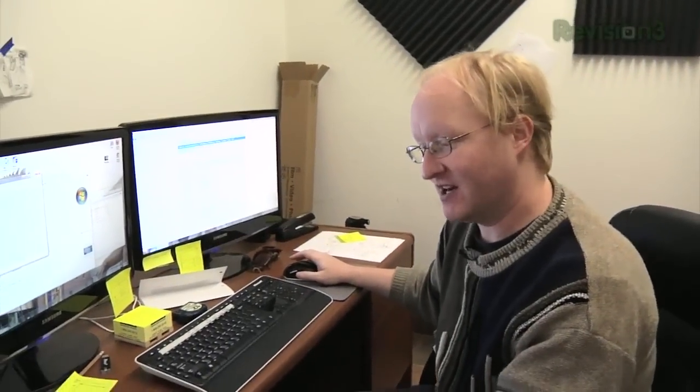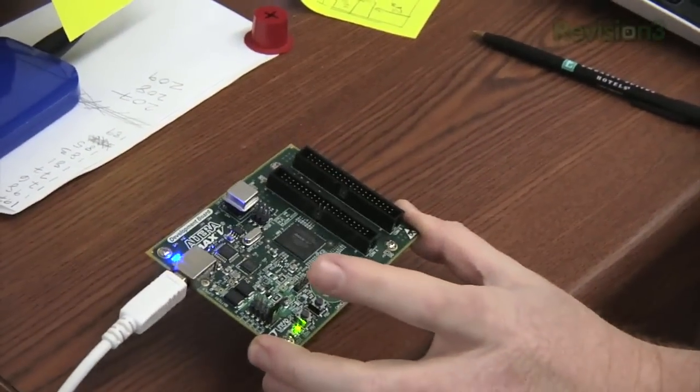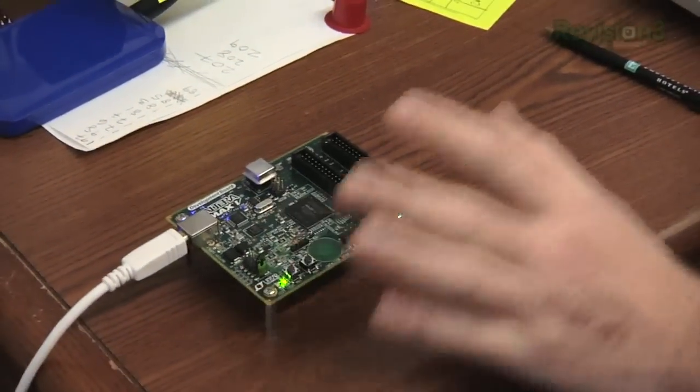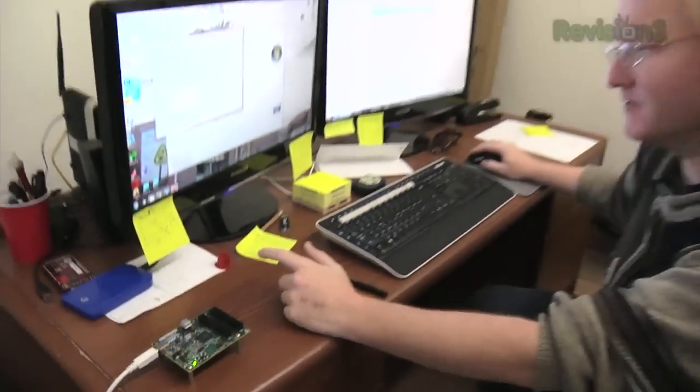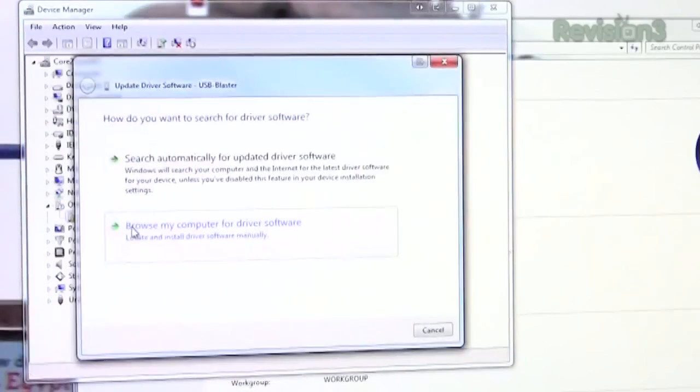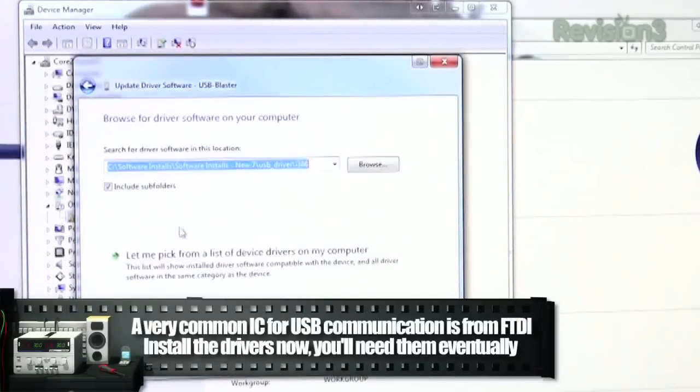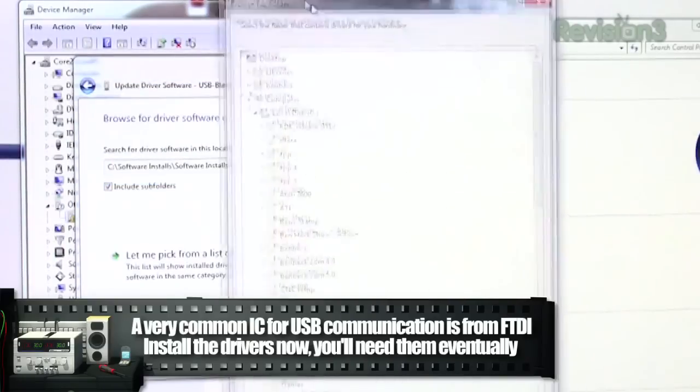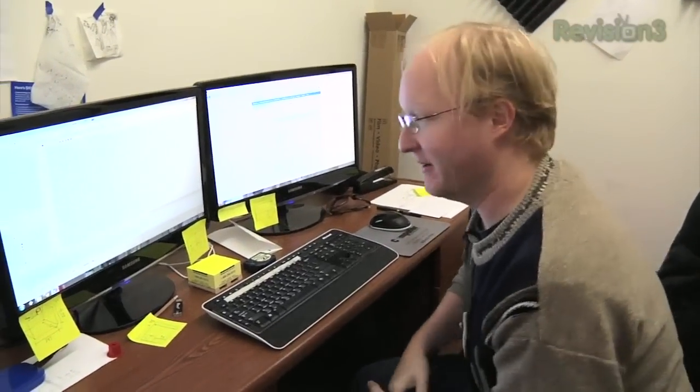All right, we've got the software installed, but we need the USB Blaster drivers. Sometimes Windows or whatever operating system you have will automatically download the drivers for these integrated components, but not always. So I'm going to go to Device Manager, Update Driver Software, Browse my computer for aforementioned software, and go to USB Blaster. We now have the Quartus 2 software installed, and we're ready to try a test program.